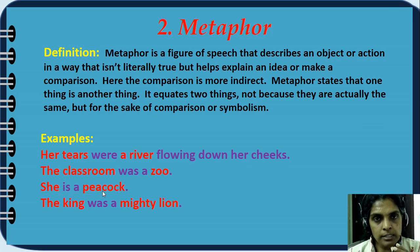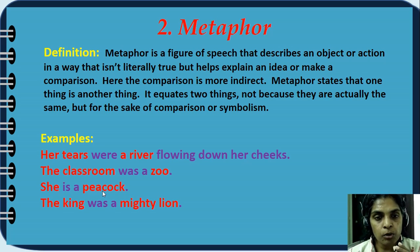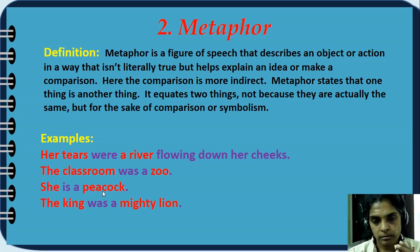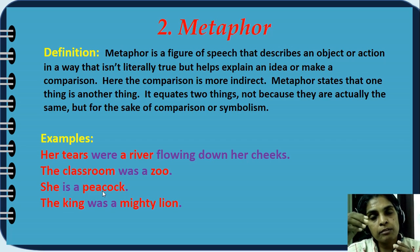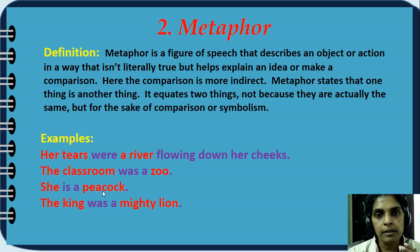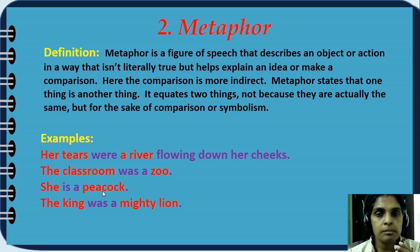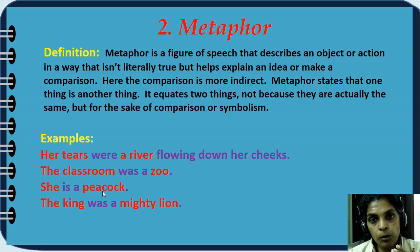We are using the same sentences as we used for simile so that it will be easy to understand. There we saw 'her tears were like a river' — but in metaphor, 'her tears were a river flowing down her cheeks.' We are not telling they were flowing like a river; we are telling they are a river. That is the difference between metaphor and simile. 'The classroom was a zoo' — metaphor says it was a zoo. But in simile we say 'classroom was like a zoo.' 'She is a peacock' — where in simile we said 'she danced like a peacock.' 'The king was a mighty lion.'